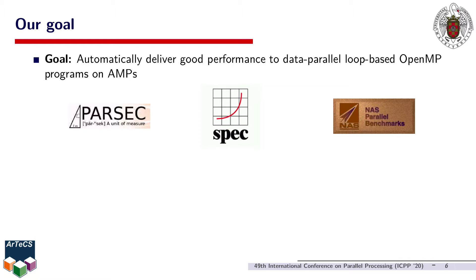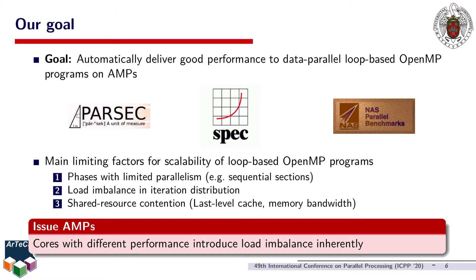The primary goal of this work was to automatically deliver acceptable performance for unmodified loop-based OpenMP applications on AMPs. This type of application is widely used today in scientific and engineering domains, and they are commonly used as a tool for performance evaluation on multicore systems. The scalability of data-parallel loop-based OpenMP programs greatly depends on aspects such as the existence of phases with limited parallelism, or on how effectively the runtime system balances the load when assigning the various loop iterations to different worker threads. Unfortunately, having cores with different performance, which is the case on asymmetric multicore systems, makes it even more difficult to balance the load.